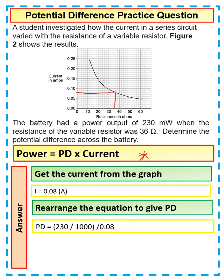We're going to get our potential difference equal to 230 divided by 1,000, so 0.23. And we're going to divide that by the 0.08 that we've just worked out that we've got from the graph.